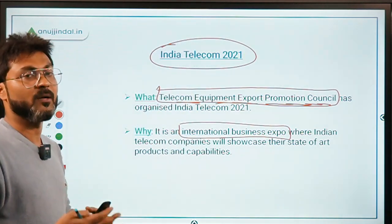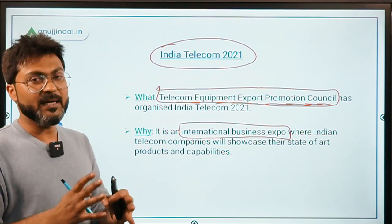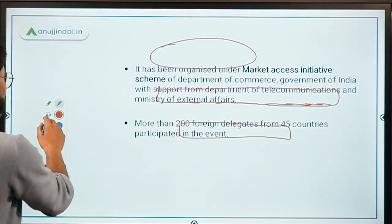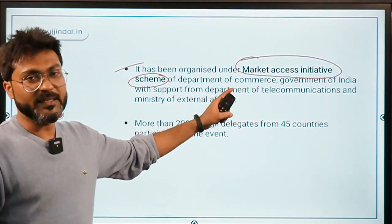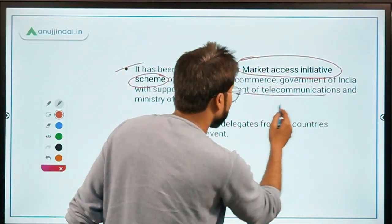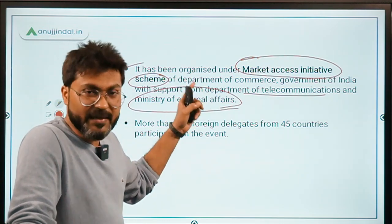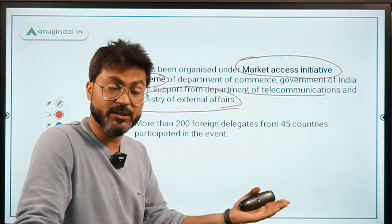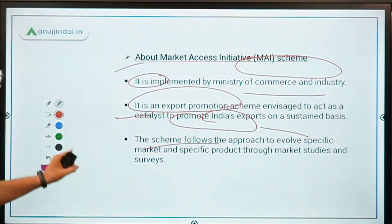India Telecom 2021 is basically an international business expo which provided a platform to Indian telecom companies to showcase their capabilities and state-of-the-art products. It was organized under the Market Access Initiative scheme of the Department of Commerce, in collaboration with the Department of Telecommunications and the Ministry of External Affairs. More than 200 foreign delegates from 45 countries participated.